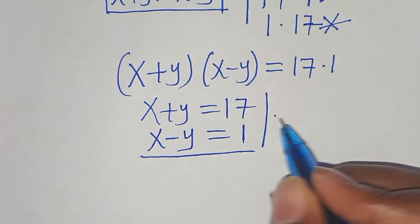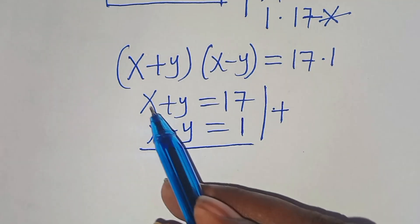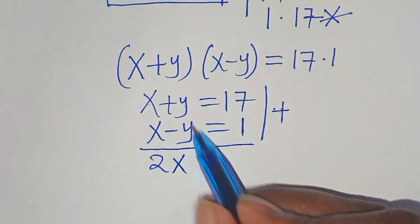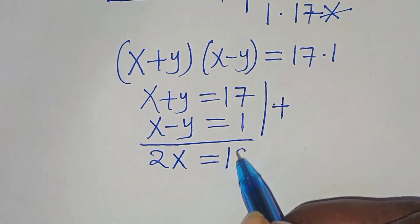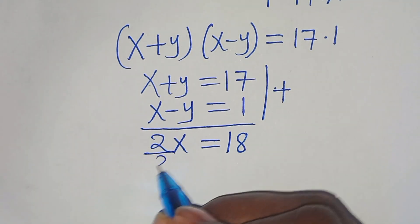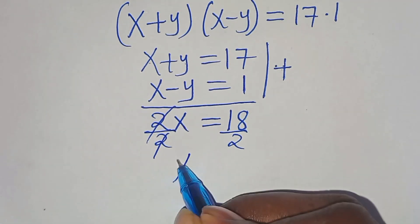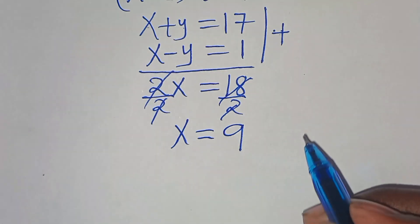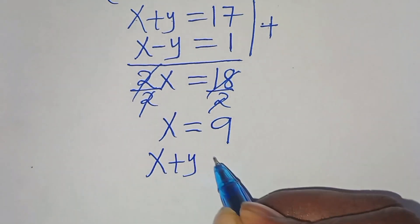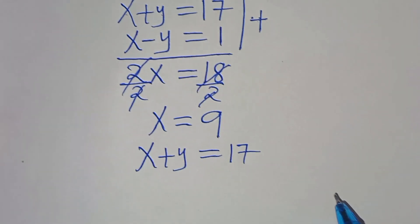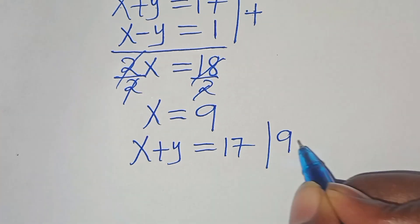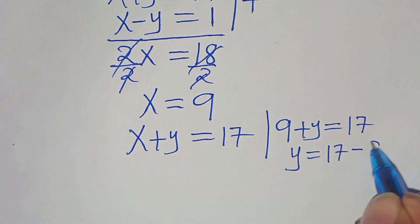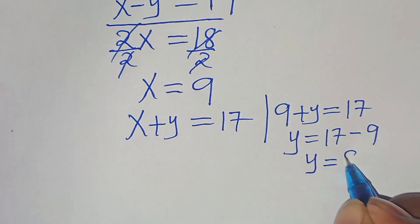We have two systems of linear equations. Adding them: X plus X gives 2X, and Y plus negative Y simplifies to 0, while 17 plus 1 equals 18. Dividing both sides by 2, X equals 18 divided by 2, which is equal to 9. To solve for Y, substituting X equals 9 into X plus Y equals 17 gives 9 plus Y equals 17, so Y equals 17 minus 9, which is equal to 8.